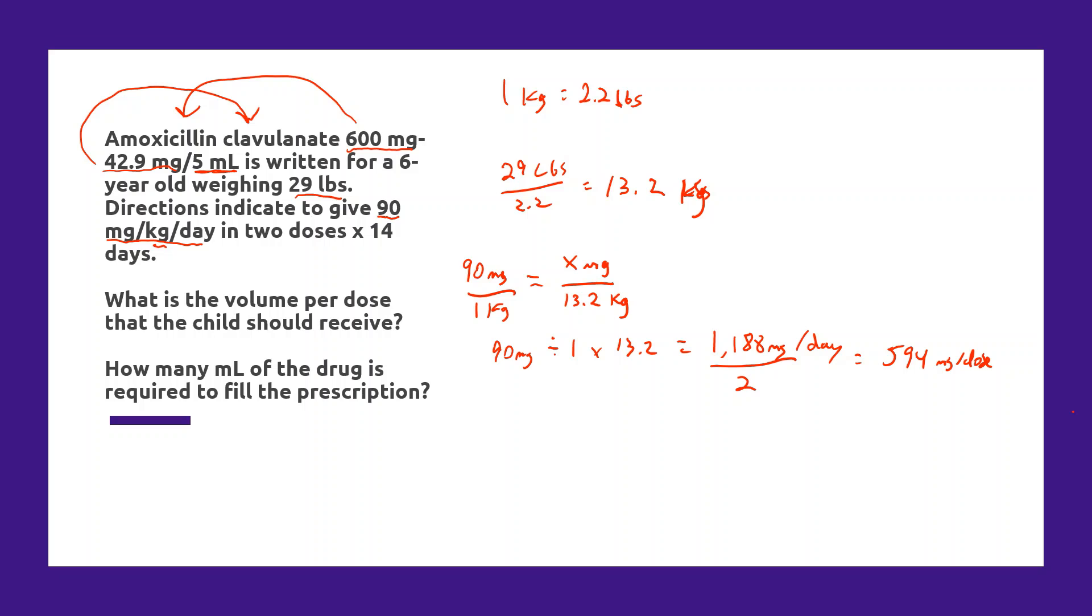Now the question is asking us, what's the volume that the child should receive? We have another conversion to make. We'll set up a proportion and we need to know the volume in milliliters. How many milliliters are there in a 594 milligram dose? Our known ratio is 600 milligrams per 5 mL. To solve this, we would take 5 divided by 600 times 594. 5 divided by 600 times 594 is going to be equal to 4.95 milliliters. And at this dose, you could simply round that up to 5 milliliters.